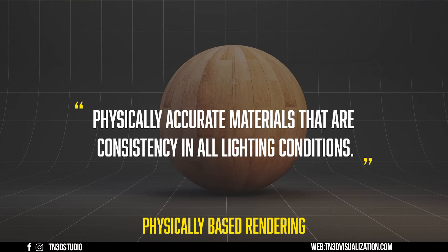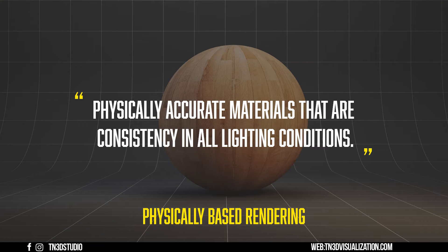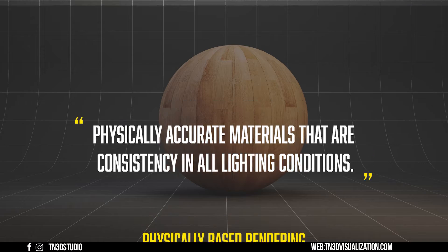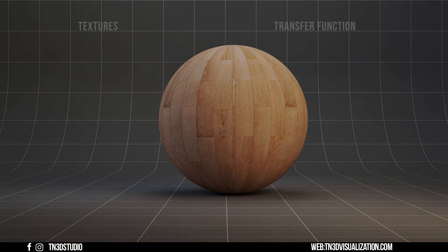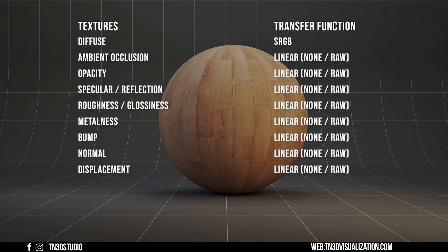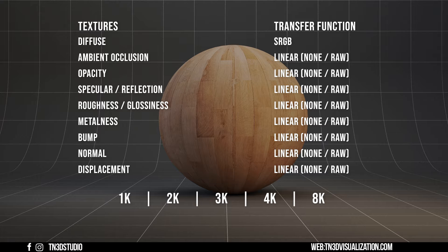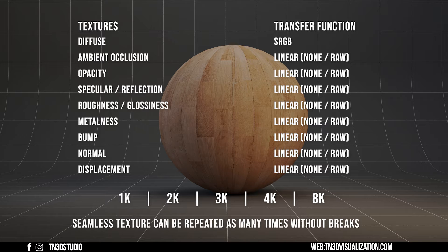One of the good things about PBR materials is that they are consistent under different lighting conditions, and this is due to the textures that are optimizing its composition. When you are searching or looking for PBR materials, these are the textures you should be looking for: diffuse, ambient occlusion, opacity, specular, roughness and glossiness, metalness, bump, normal and displacement. You want to make sure these textures are of decent resolution and seamless, meaning they could be repeated as many times as needed without any breaks.